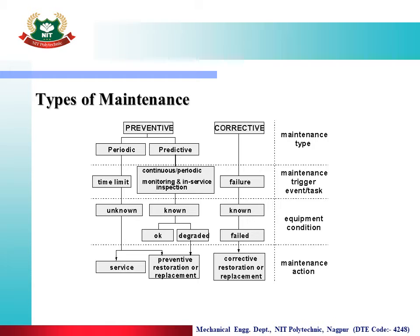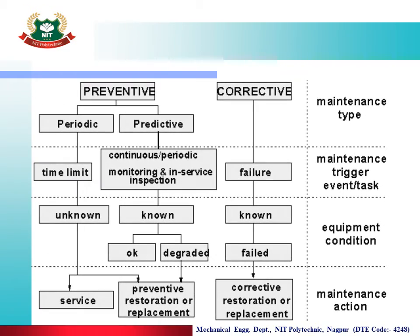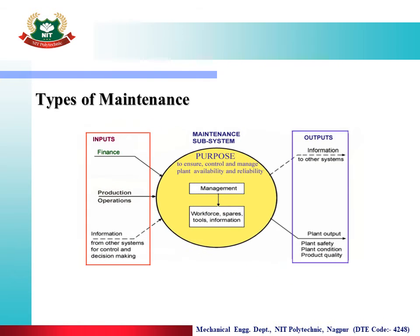These types of maintenance are used in all industries — manufacturing industry or power generation industry — like a hydroelectric power plant, thermal power plant, steam power plant, gas turbine power plant, and many more. So these are the types of maintenance.